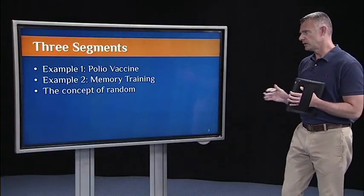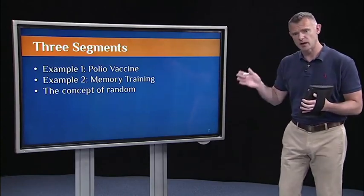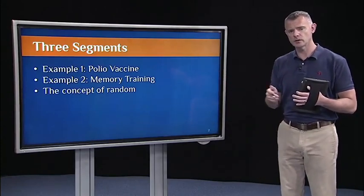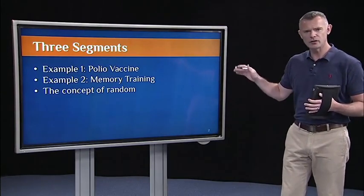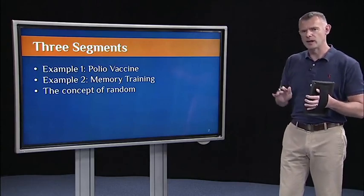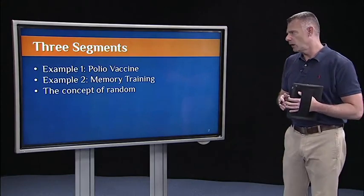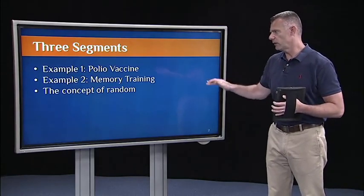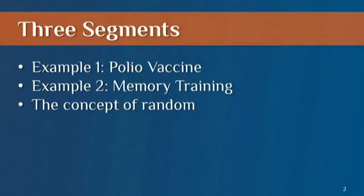This first lecture is broken up into three segments, and that'll be common as we go through the course. Each lecture will typically be broken into either two or three segments, hopefully around ten minutes each, but that'll fluctuate a bit. In this first lecture we have three segments. The first one, I'll give you just an example of experimental research in action — the polio vaccine trials.